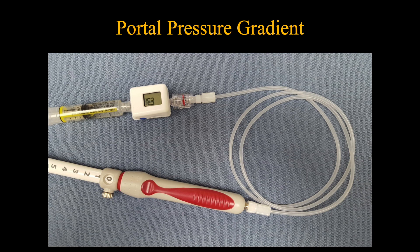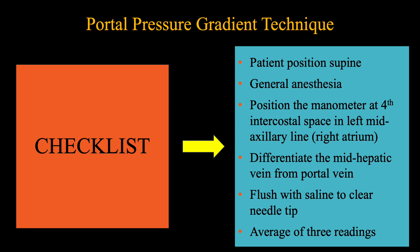Portal pressure gradient can be measured at EUS using a dedicated device from Cook Medical. The handheld manometer is attached to non-compliant tubing, which is then secured to the hub of the 25-gauge FNA needle that is primed with heparinized saline. To obtain accurate measurements, the procedure is done under general anesthesia with the patient in the supine position. The manometer is placed in the left mid-axillary line at the fourth intercostal space, where the right atrium is present. Prior to puncture, it is important to differentiate the mid-hepatic vein from the portal vein. The mid-hepatic vein is punctured at 2 cm where it joins the IVC.